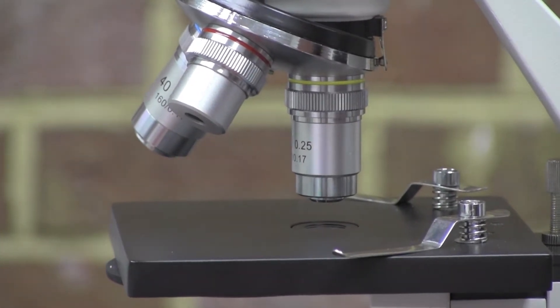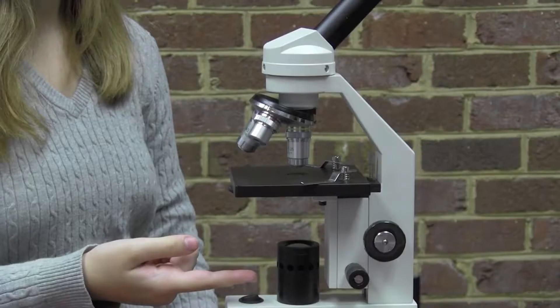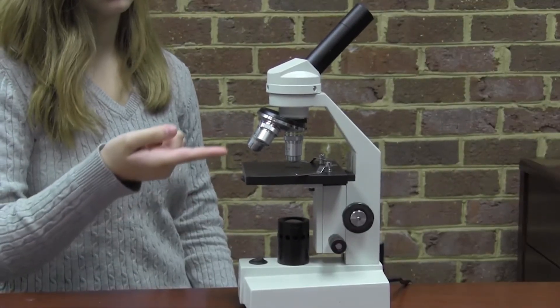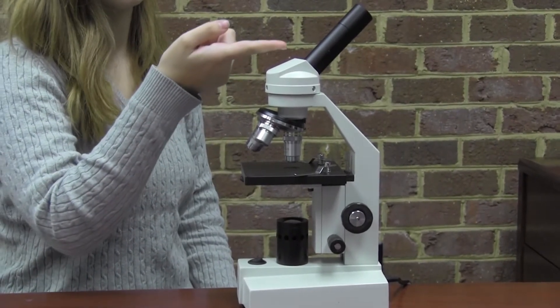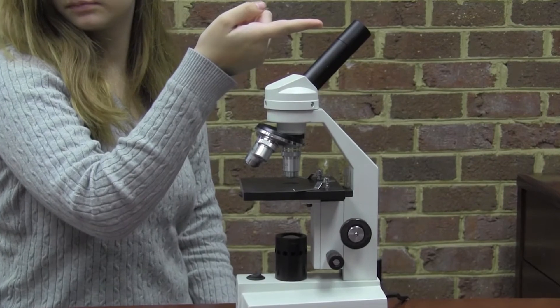This hole allows light from the illuminator, which may be an electrical light or a mirror, to travel up through the iris diaphragm, through the slide, through the objective lens, through the eyepiece, and finally through the ocular lens to your eye.